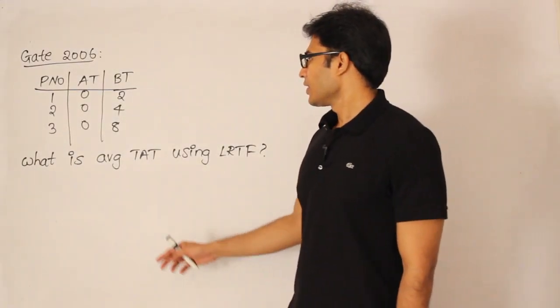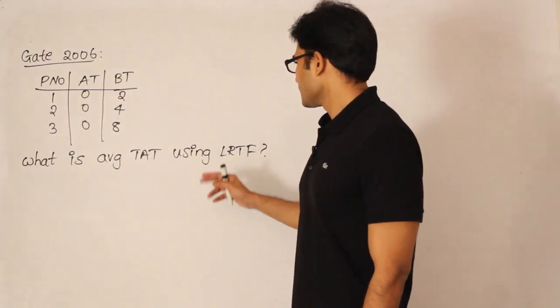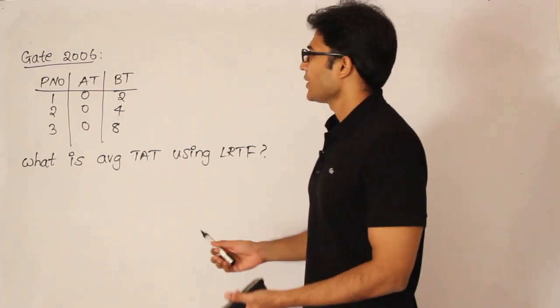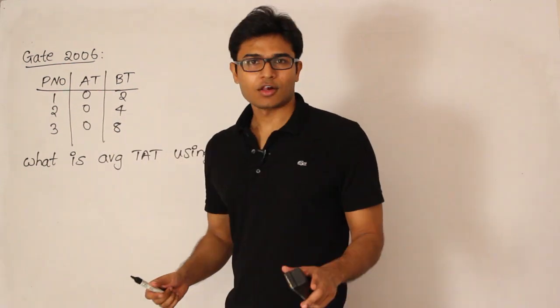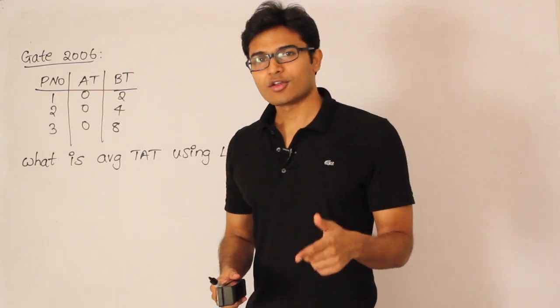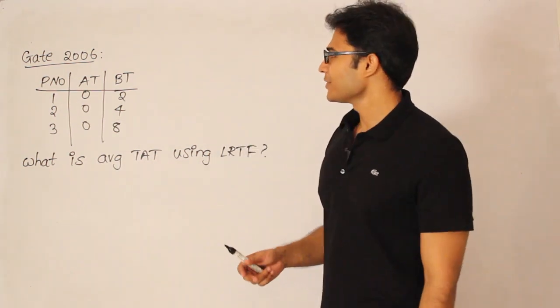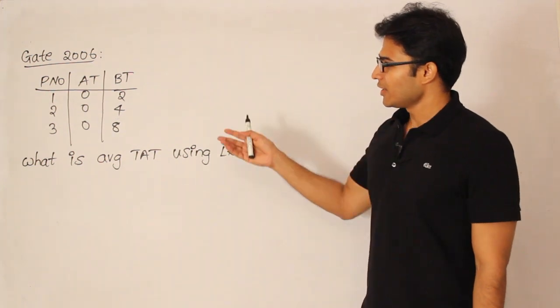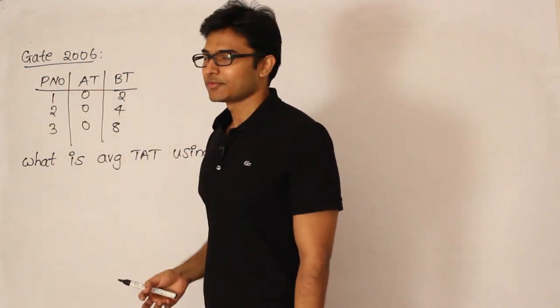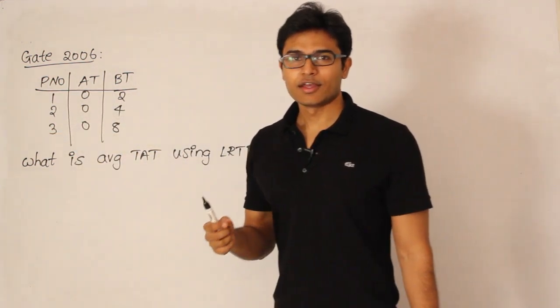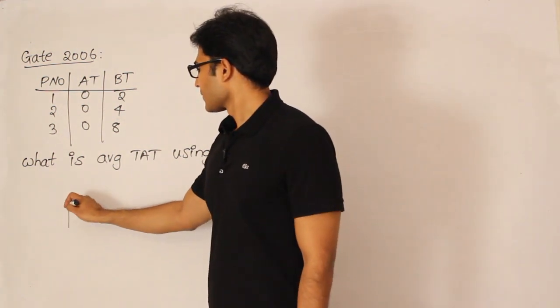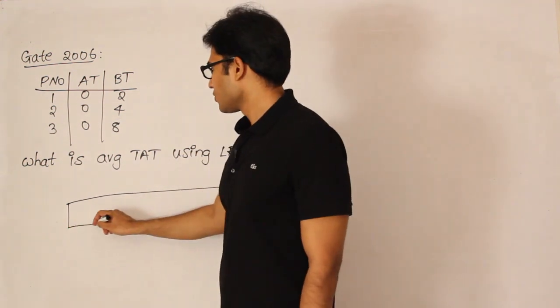Now watch this one. What is the average turnaround time using longest remaining time first? You can see that all the arrival times are zeros, which means all the processes are directly available from the beginning. Now it is up to you to choose the longest one first, and whenever the burst times are same and arrival times are same, then you go with the process IDs, which means you take the process ID which is having the lowest process ID.